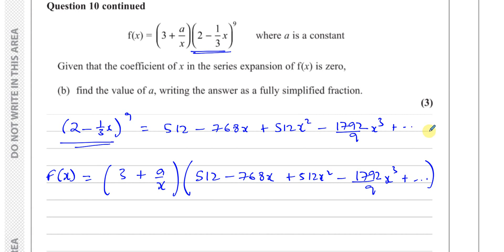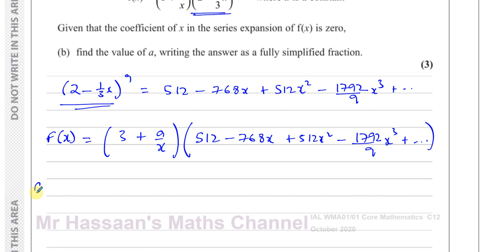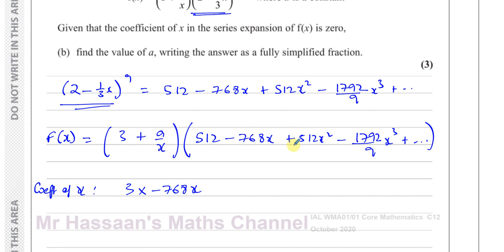It says the coefficient of x in the expansion of F(x) is zero. When I expand, the x terms come from: three multiplied by negative 768x, which gives the x term from that bracket — nothing else from multiplying three gives an x term. Then A over x multiplied by 512x² gives 512A times x — because the x's cancel to give x. Multiplying A over x by any other term gives x to the power of minus one, a constant, x squared, etc. So these are the only two x terms.